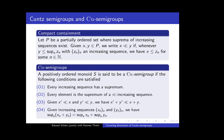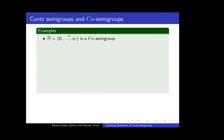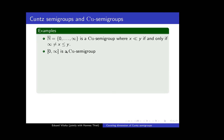Let me give a bunch of examples of both CU semi-groups and this compact containment relation. The first is the natural numbers with infinity added. This is a CU semi-group when equipped with the usual order and addition, and by studying the order one can see that x is way below y if and only if x is finite and x is bounded by y. As a second example, you can take the non-negative extended real line, which when equipped with the usual order and addition is also a CU semi-group. By studying its order, one sees that x is way below y if and only if x is strictly less than y.